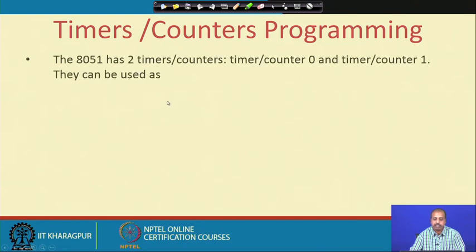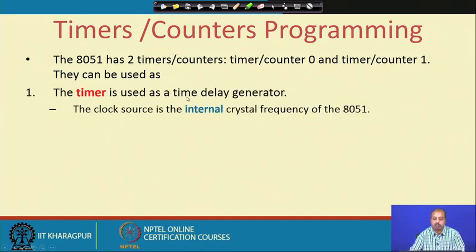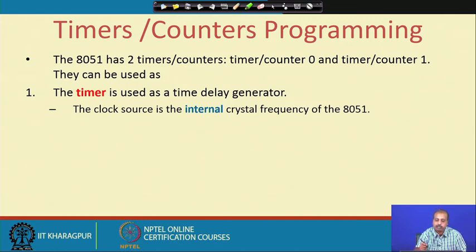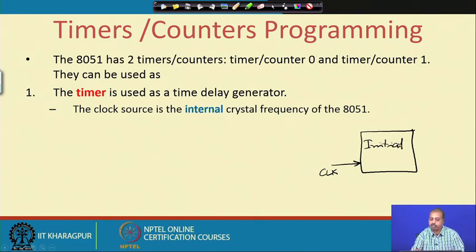The 8051 has two timer/counters: timer/counter 0 and timer/counter 1. They can be used as timers to produce time delay, in which case the clock source is the internal crystal frequency. A timer module has to be operated with some clock signal, and there will be some initial value loaded into the timer. When clock pulses arrive, this initial value will be used as the starting point.